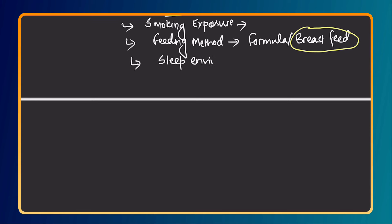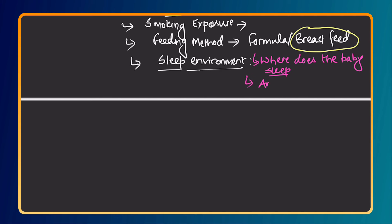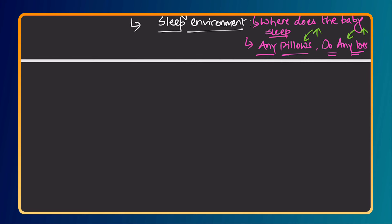The next important question is about the sleep environment. Ask: Where does the baby sleep? Are any pillows or toys kept in the cot? These things increase the risk of SIDS. Ask whether the baby was sleeping on a cot or with the mother, because it is recommended that young babies sleep on a separate cot — sleeping with the mother increases the risk of SIDS. These questions will also inform our counselling about risky versus safe behaviours.